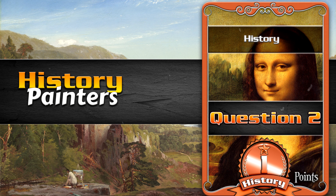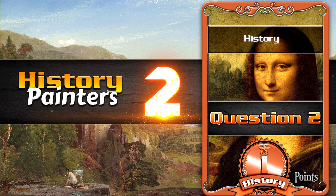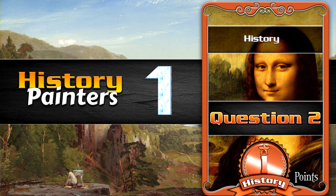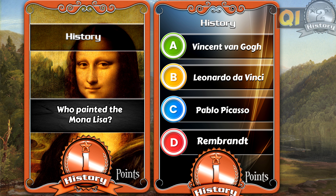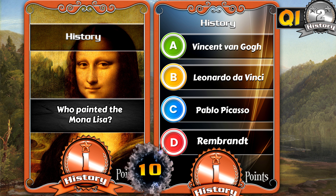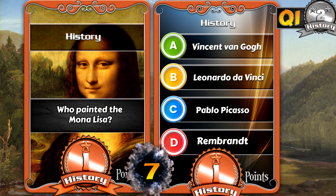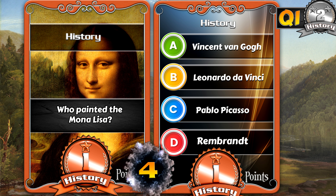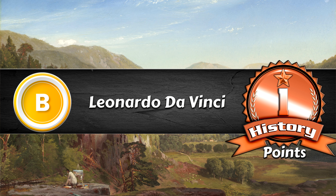Question 2. History. Painters. Who painted the Mona Lisa? Vincent van Gogh. Leonardo da Vinci. Pablo Picasso. Rembrandt. 3, 2, 1. The answer is Leonardo da Vinci.